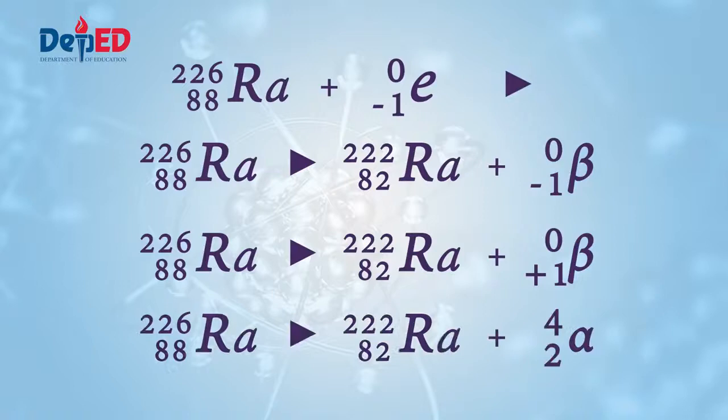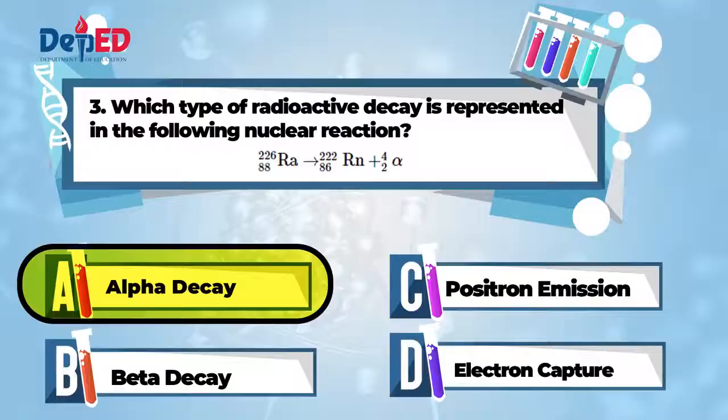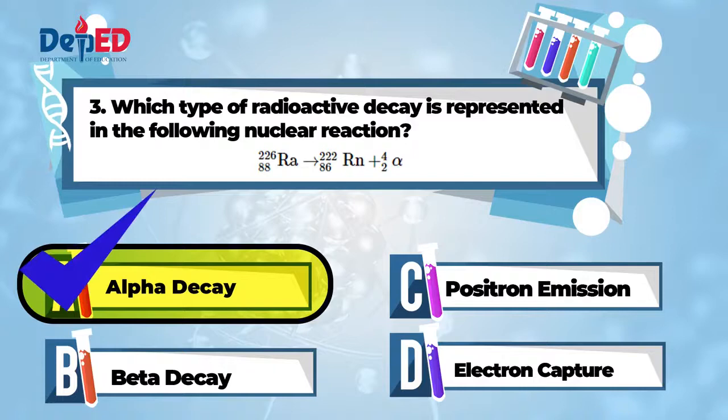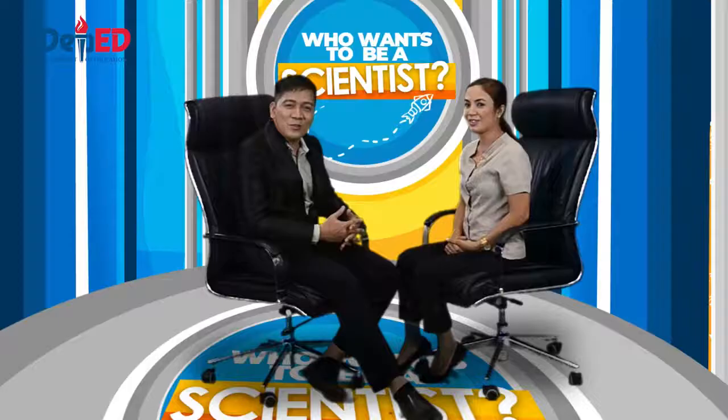As you can see, an alpha particle is emitted. An alpha particle has two protons and two neutrons. Just like the helium. But, it does not have electrons. It seems that you really know what you're talking about. Let's see if you got the correct answer. Letter A, alpha decay. It's correct! Good job! Now, let's go to the fourth and final question.